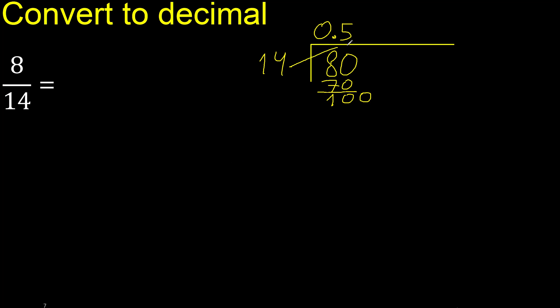100. 14 multiplied by 8 is greater. Multiply by 7 is 98. Subtract, the result is 2.